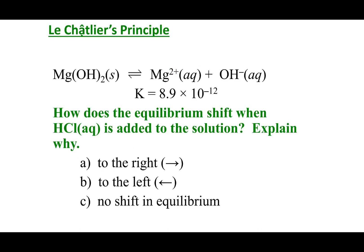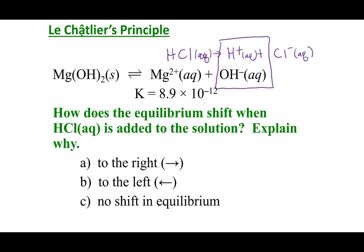Let's say I have this system at equilibrium and I add HCl to the solution — what's going to happen? I'm adding HCl. HCl is a strong electrolyte, and when I put the aqueous sign by it, it's going to make H+ and Cl−, both aqueous. What I'm really adding is H+ and Cl−. But we don't see any H+ or Cl− in this reaction, so you might first think I'm not changing anything in my equilibrium — maybe it just stays at equilibrium. But be careful: can H+ or Cl− react with anything in my equilibrium?